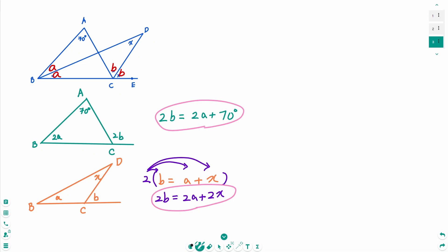Compare these two equations. So, 2B equals 2B, 2A equals 2A. That means 70 degrees equals 2X. So, 2X equals 70 degrees. Then, divide by 2 on each side. X equals 35 degrees.